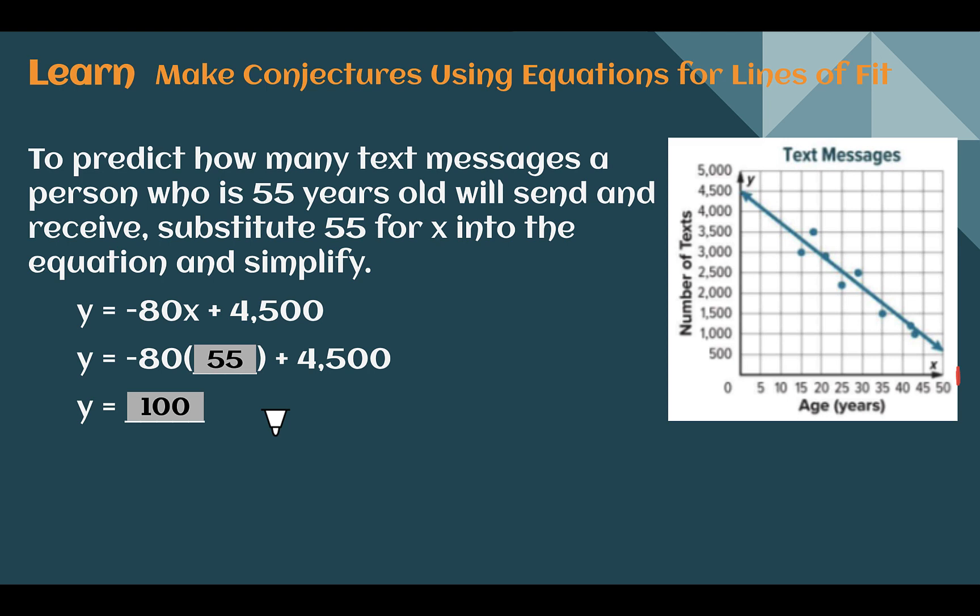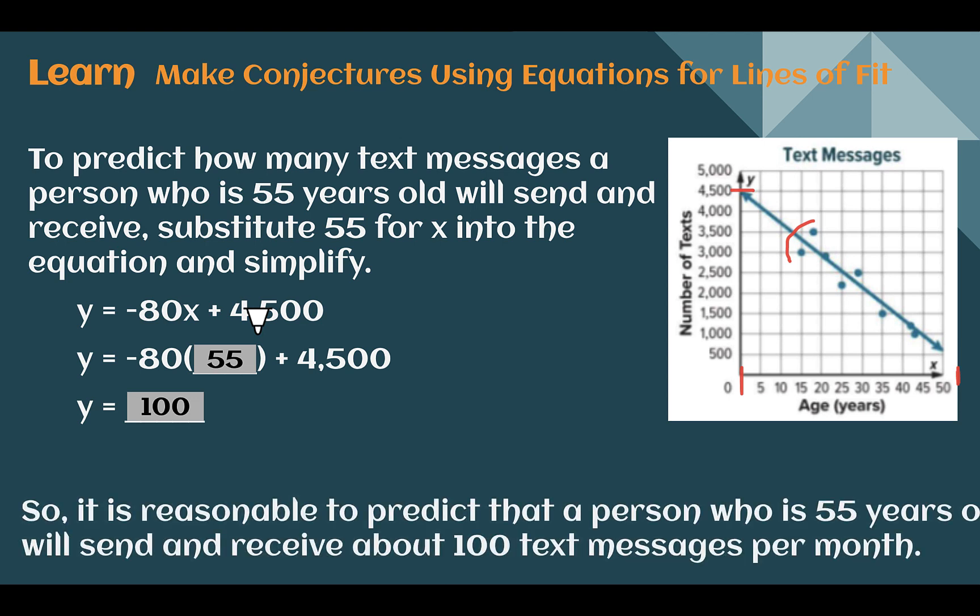Again, there may be some limitations to doing this. For example, I don't know many zero year olds who are going to be sending 4500 text messages. I don't know many one year olds who are going to be sending 4420 text messages. If you notice, the data starts at around 15 years old, so there may be some limitations to age, and eventually, if we go much past 55, we're going to end up with a negative number of text messages, which doesn't make sense either. So be careful when you are doing certain conjectures. Some of these lines have limitations to what they actually would mean in context. But in this case, we could say that it's reasonable to predict a 55 year old would send or receive about 100 text messages per month based on the line and data points we were given.